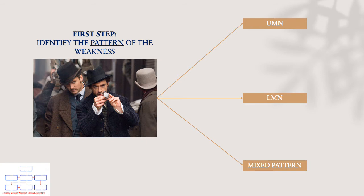The first step when approaching weakness is to always ask yourself: what is the pattern of the weakness? Is this an upper motor neuron pattern or a lower motor neuron pattern? To establish that, you will need to perform a full standard neurological exam — that's how you will find out.